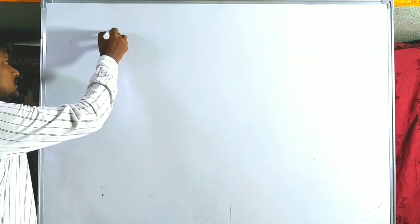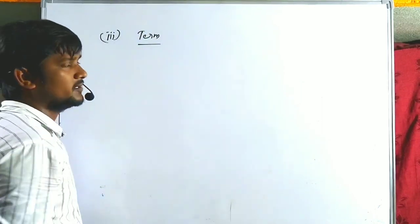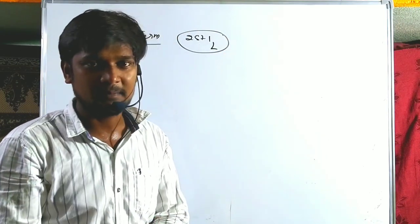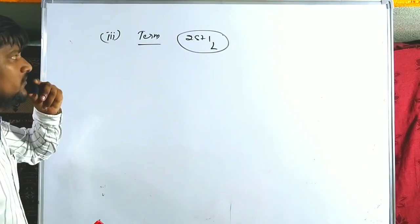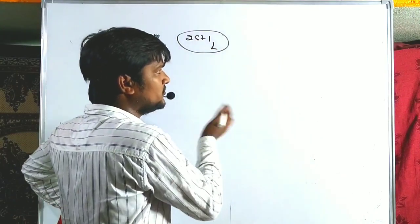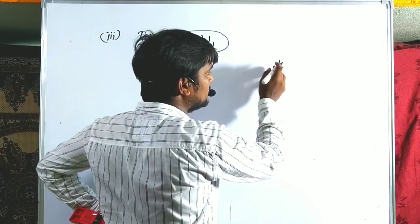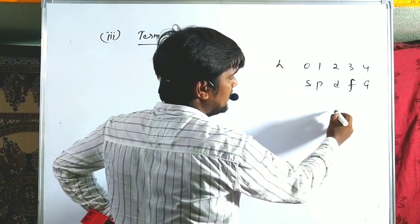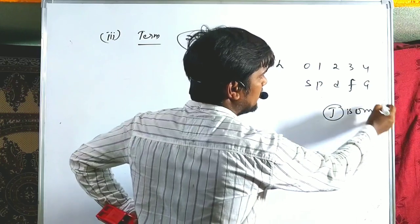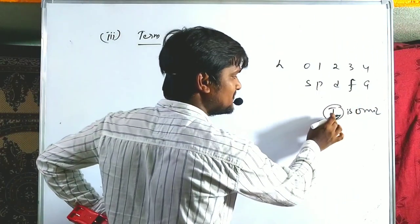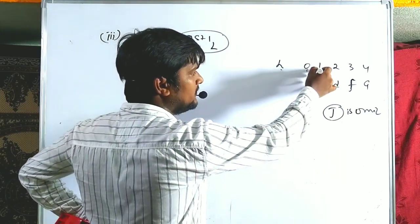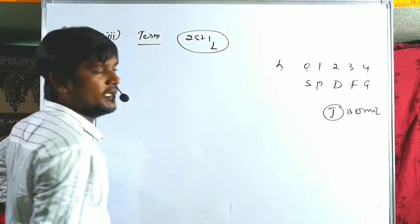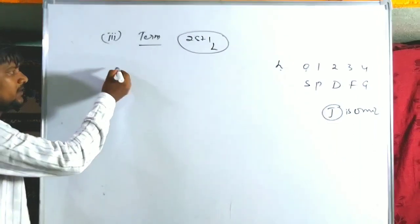For term symbols (2S+1 L without J), the formula is microstates = (2S+1)(2L+1). The L values correspond to: L=0→S, L=1→P, L=2→D, L=3→F, L=4→G (all letters alphabetically except J). The 2S+1 value in the term symbol is already the spin multiplicity.